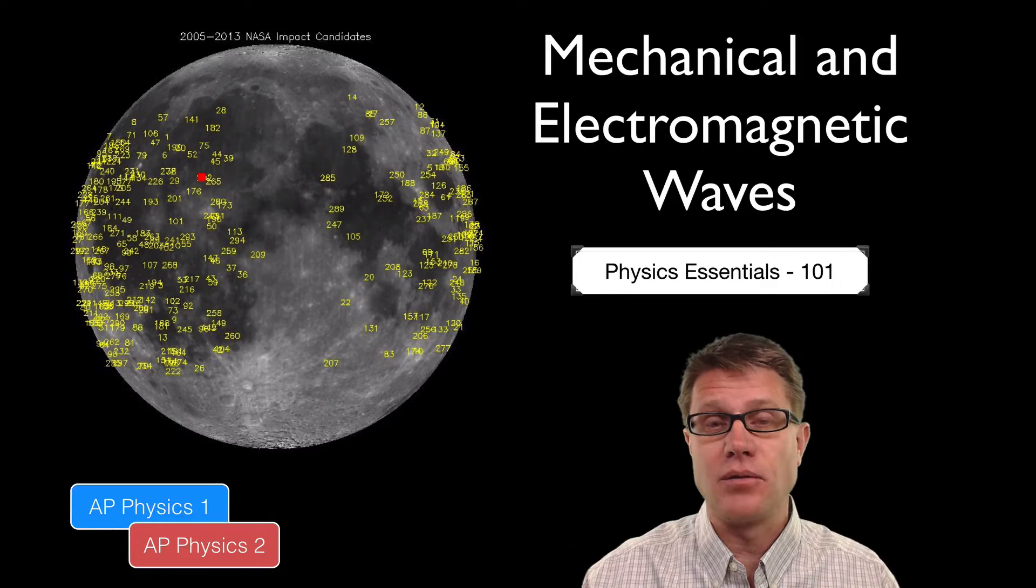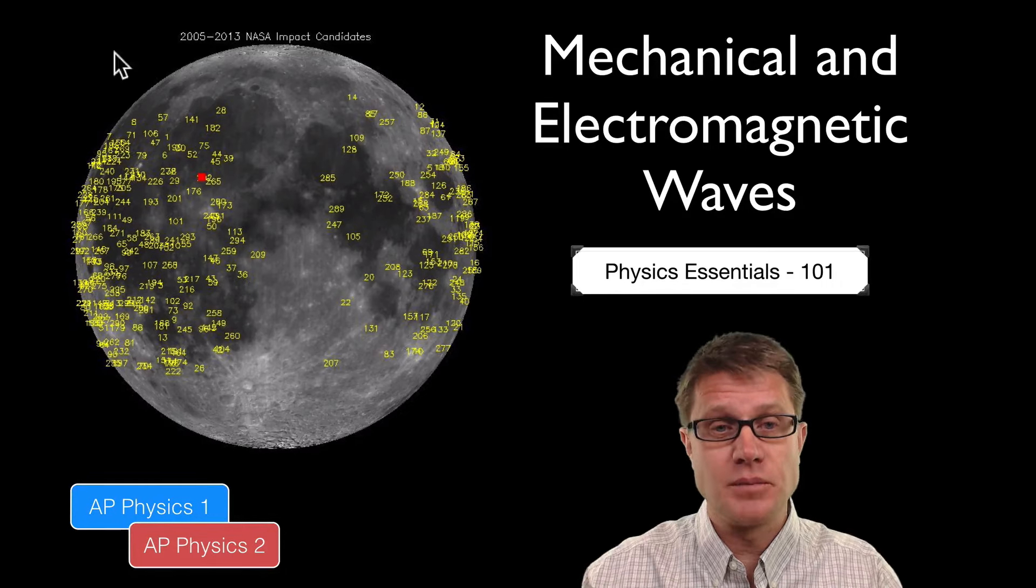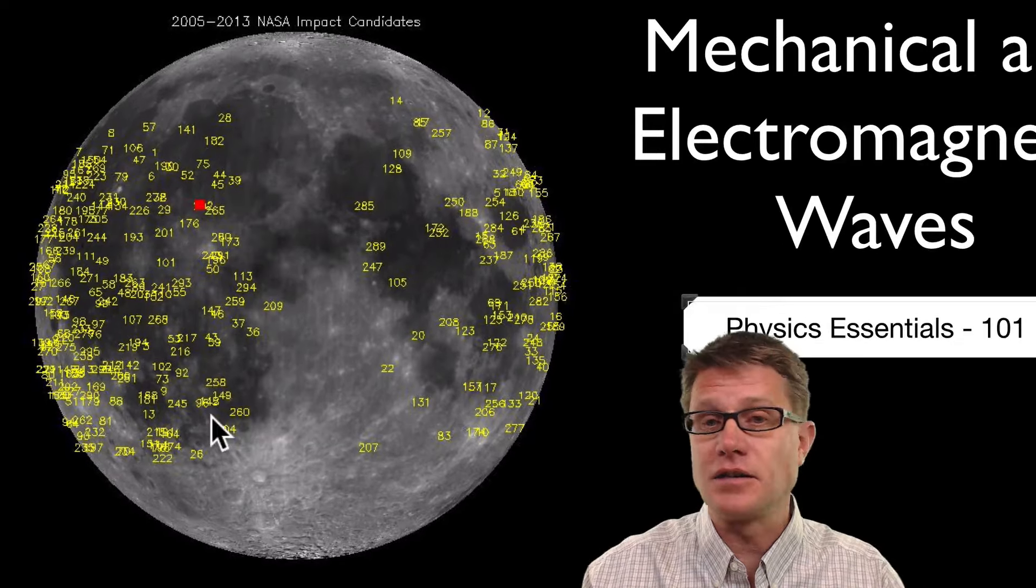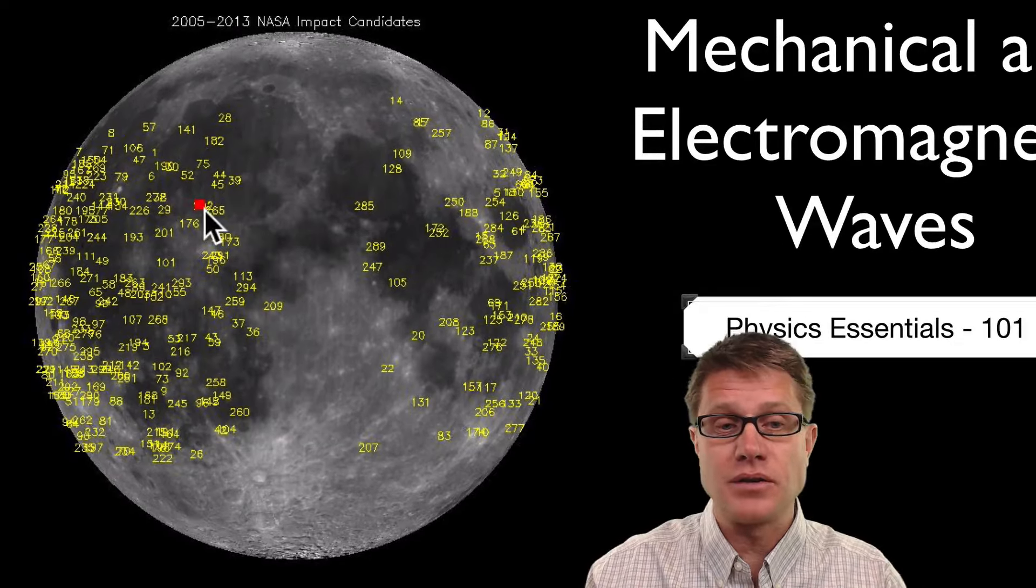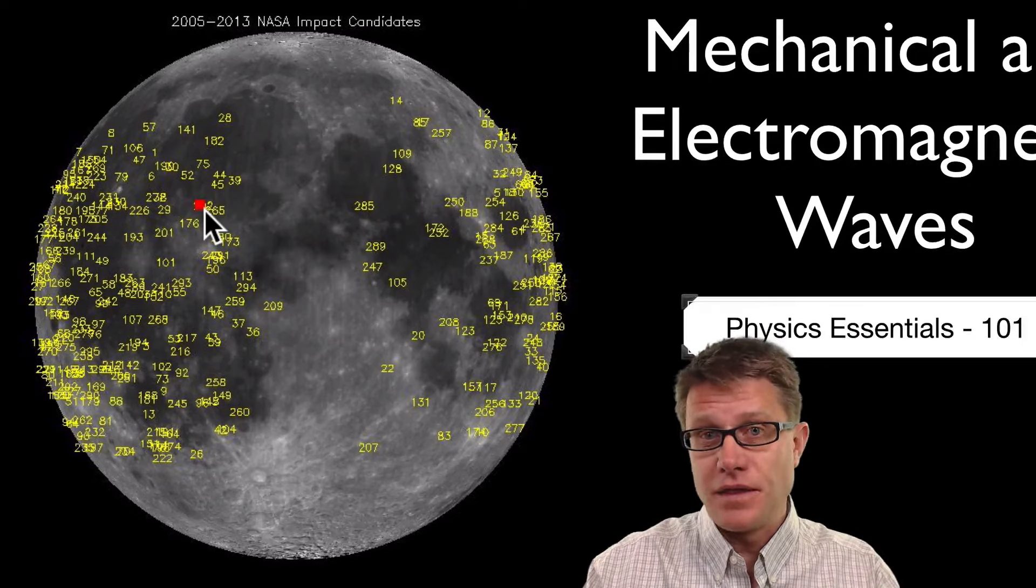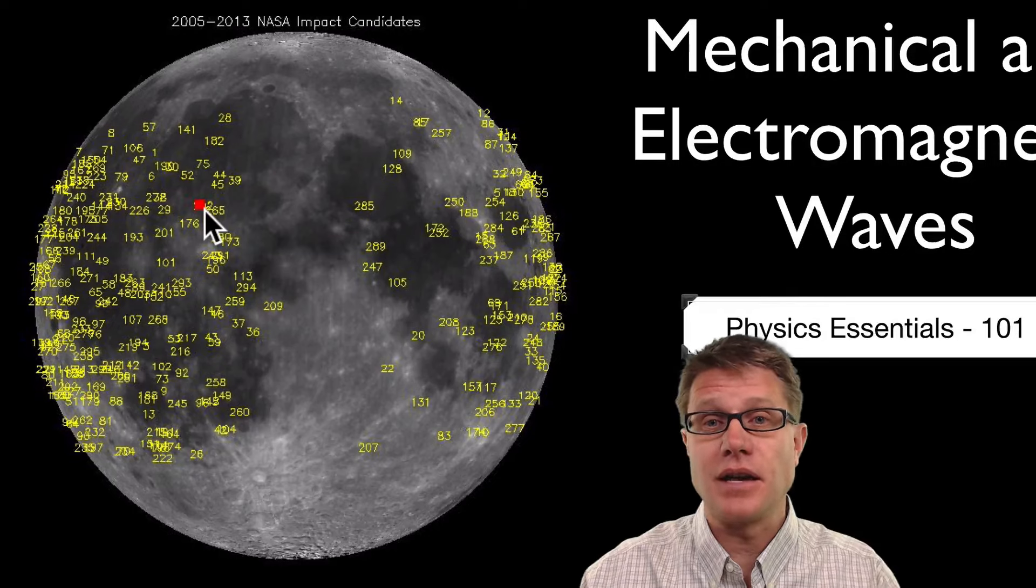An example of electromagnetic waves that we can see are explosions on the moon. The moon keeps getting hit by meteors and there are little flashes of light that NASA has been monitoring. One in 2013 was so bright that you could have seen it with the naked eye. Now that flash is moving towards our eyes through space. It is electromagnetic.